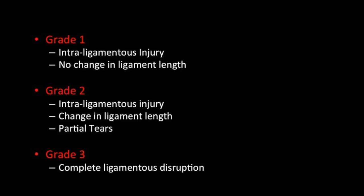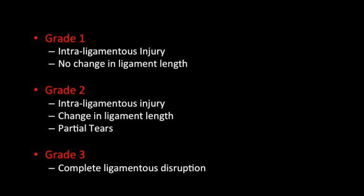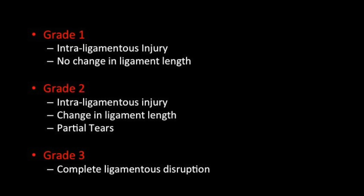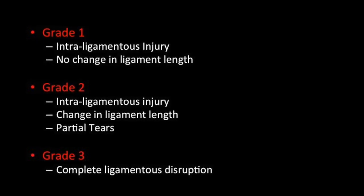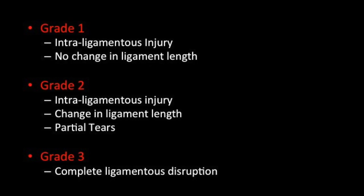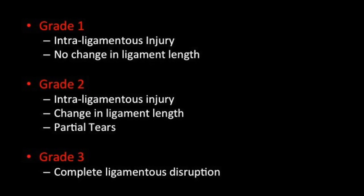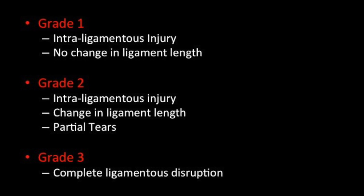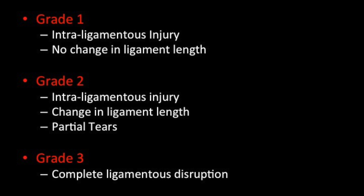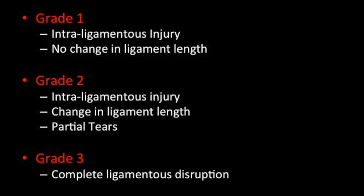Coming to grading of tear, there are basically three grades. Grade 1 injury is when there is intraligamentous injury with an edematous ACL and no change in ligament length because the fibers are intact. In a grade 2 tear there is intraligamentous injury with a change in ligament length — usually partial tears. Grade 3 tears is when we see complete ligamentous disruption.